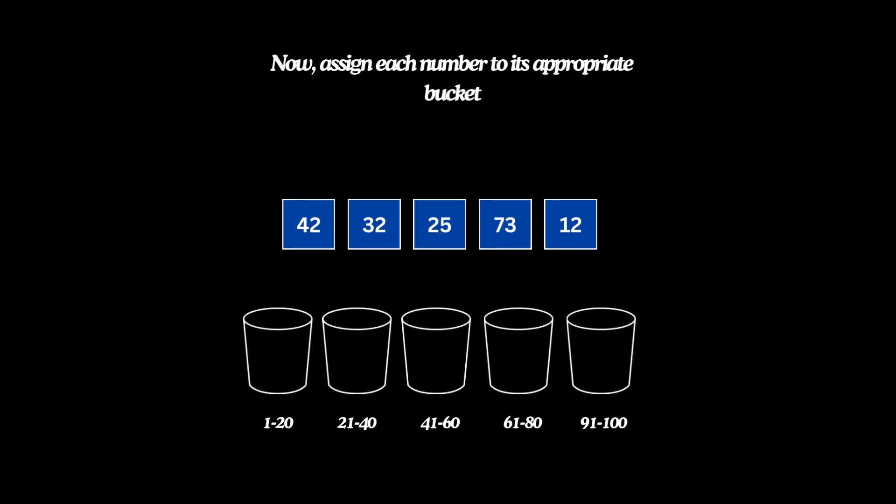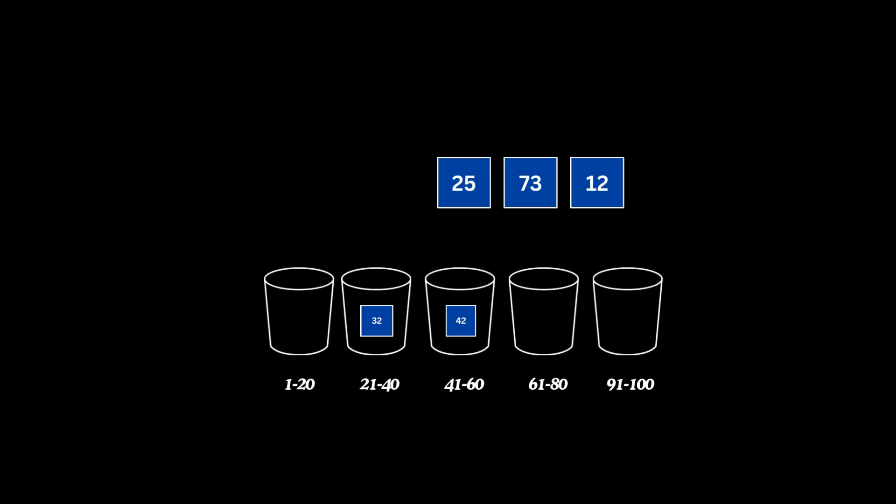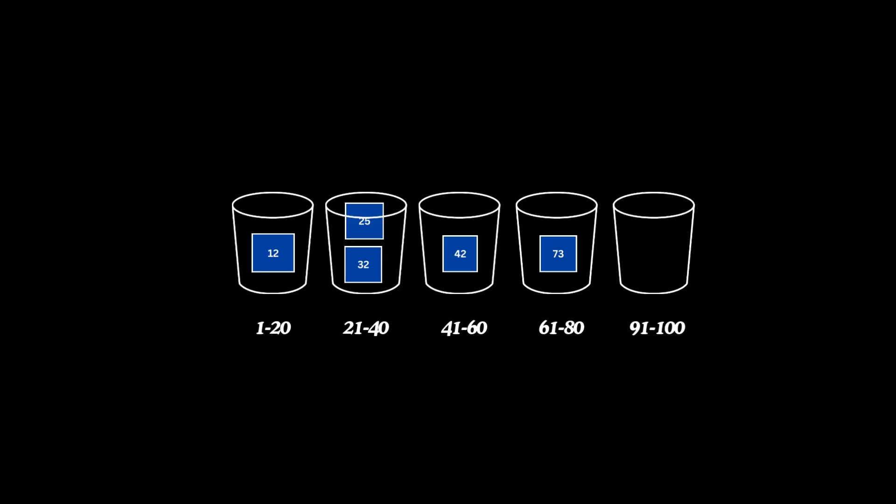Now, assign each number to its appropriate bucket. 42 goes to bucket 3, 32 goes to bucket 2, 25 goes to bucket 2, 73 to bucket 4, and 12 to bucket 1.